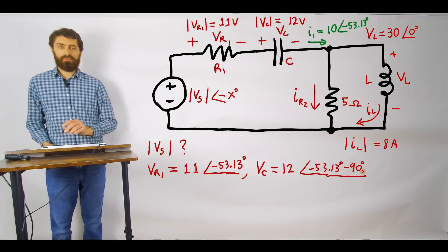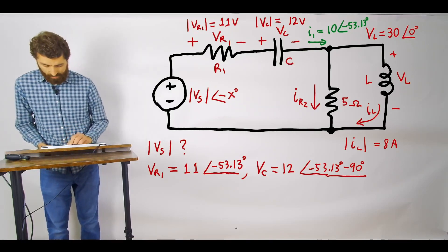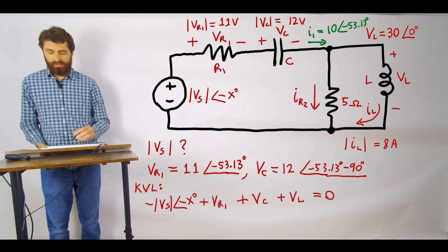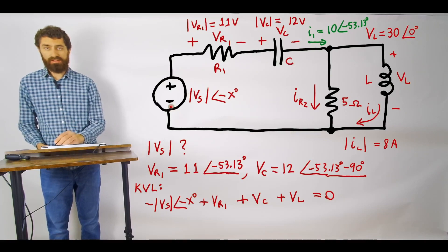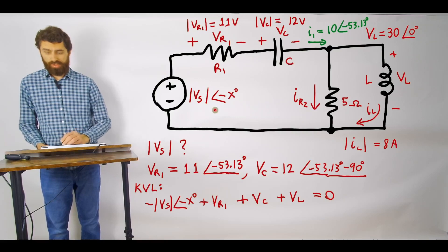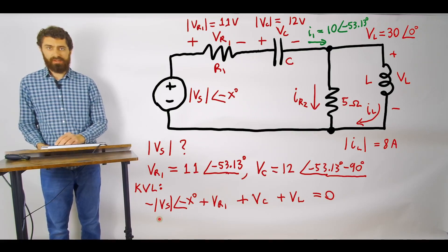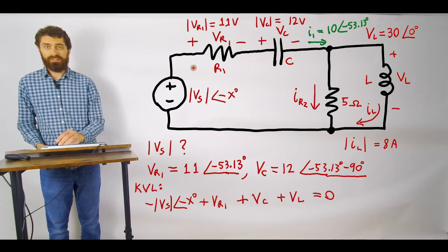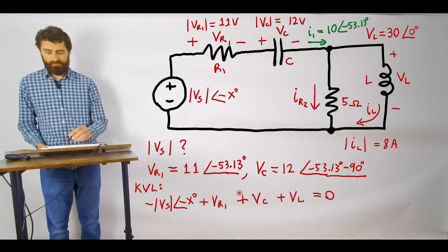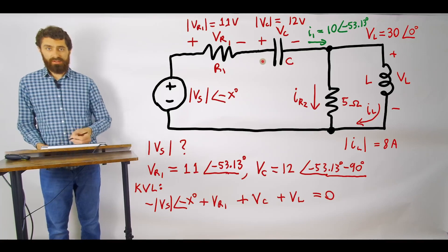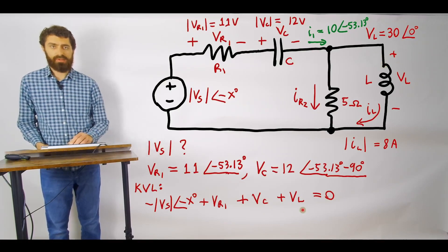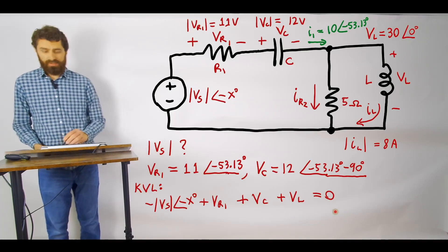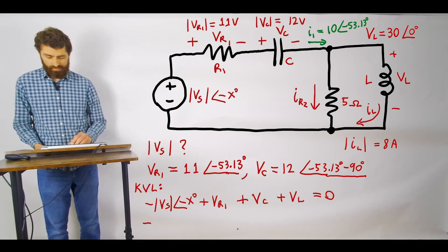So there are the voltages we have there so then we can go ahead and apply KVL here. So we're going around this loop here in this direction here. I hit a minus sign so we do minus this voltage term here so minus Vs angle negative x degrees then we hit a plus sign here so that will be plus Vr1 then we hit plus Vc here so that will be plus Vc and then we hit plus Vl here and so that'll be plus Vl all equal to zero. So then what we can do is we can take these values and plug them in like that